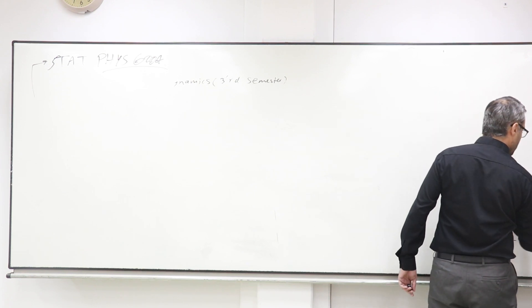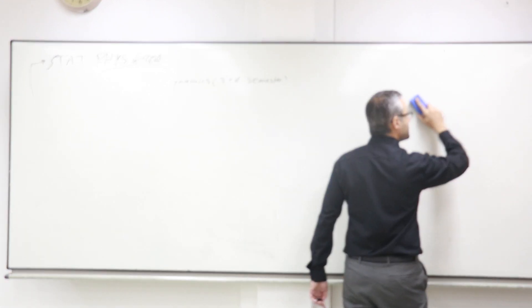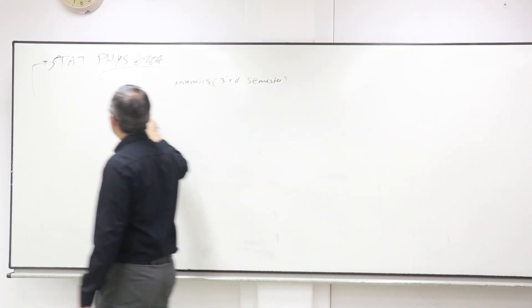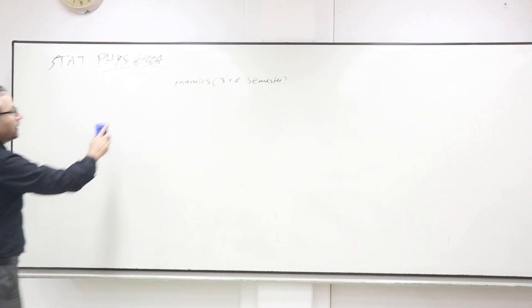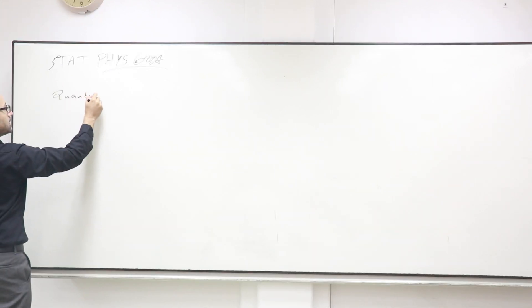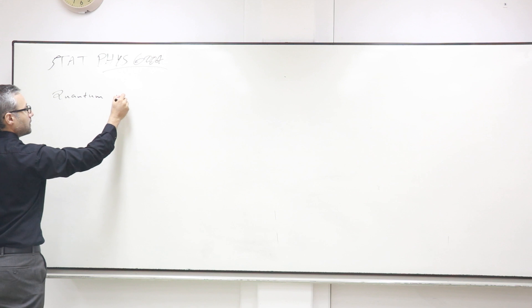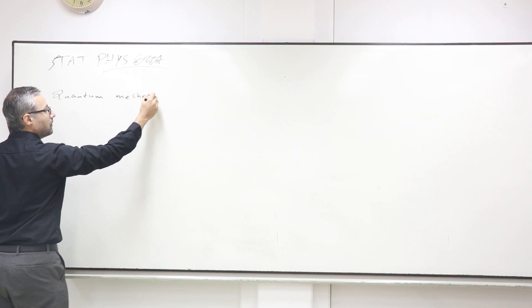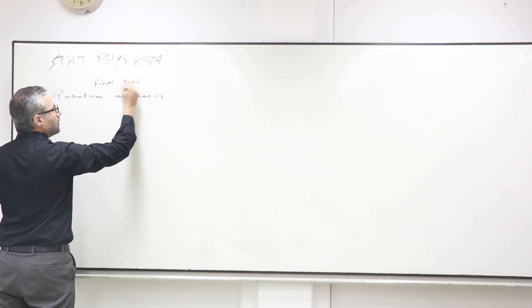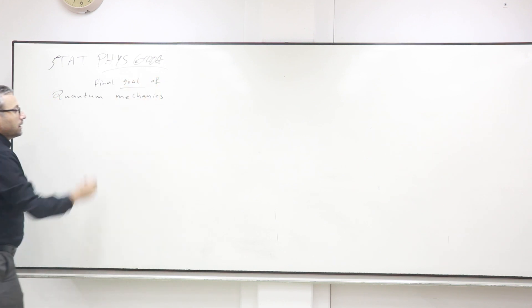There are two approaches to classical mechanics: one is Newton's laws, and the other is using the Lagrangian-Hamiltonian dynamics. I will keep that for the next lecture — next lecture I will give you the Lagrangian-Hamiltonian formulation. Now I want to tell you the statement of quantum mechanics: what is the final goal of quantum mechanics? In quantum mechanics, first of all, the size of the system is tiny.